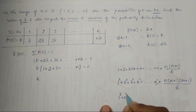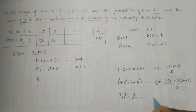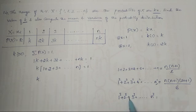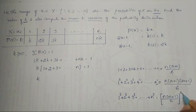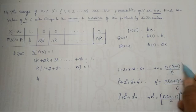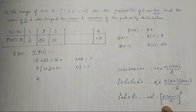And one more: 1³ + 2³ + 3³ so on up to n³, the summation of cubes of first n natural numbers, is equal to [n(n+1)/2]². This is the same as the first formula but whole squared.